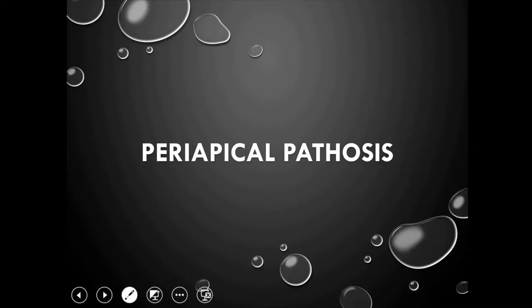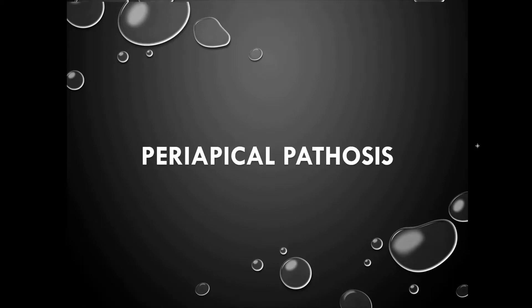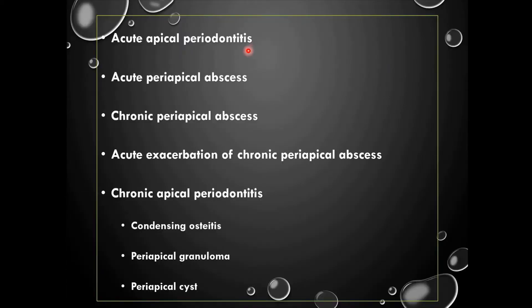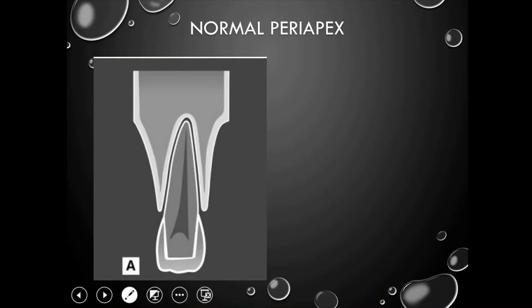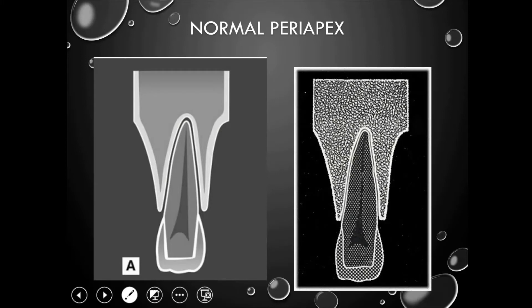Let us see what are the different periapical pathosis. Periapical lesions can be acute apical periodontitis, acute periapical abscess, chronic periapical abscess, acute exacerbation of chronic periapical abscess, and chronic apical periodontitis. Under chronic apical periodontitis we have condensing osteitis, periapical granuloma, and periapical cyst.